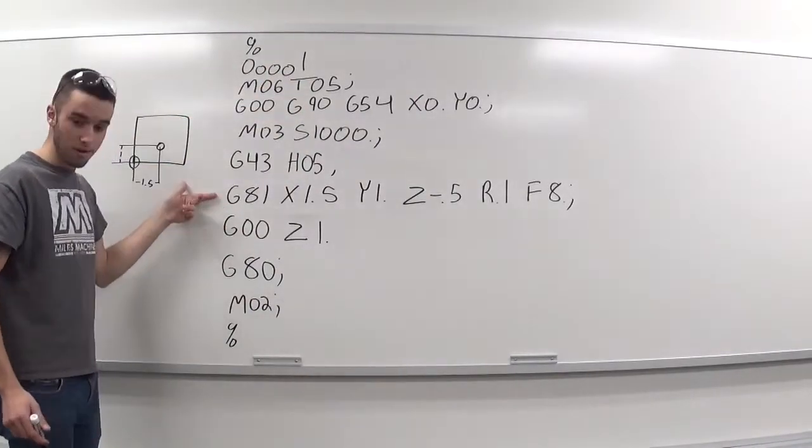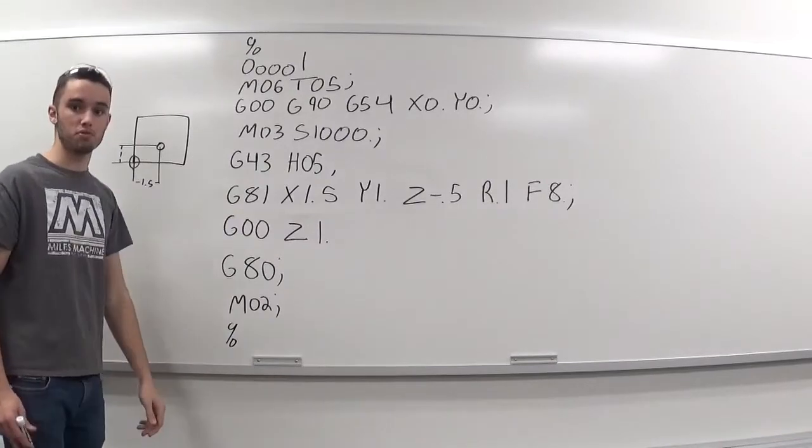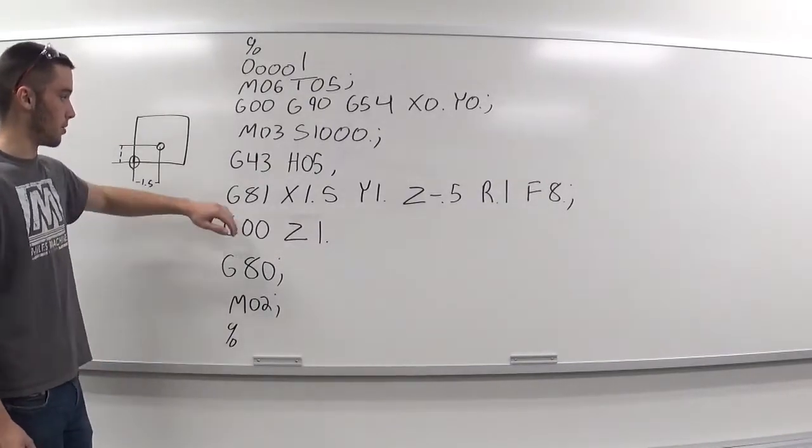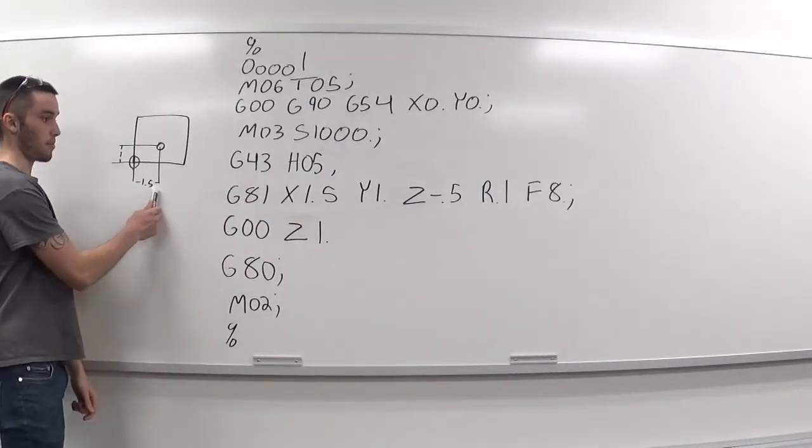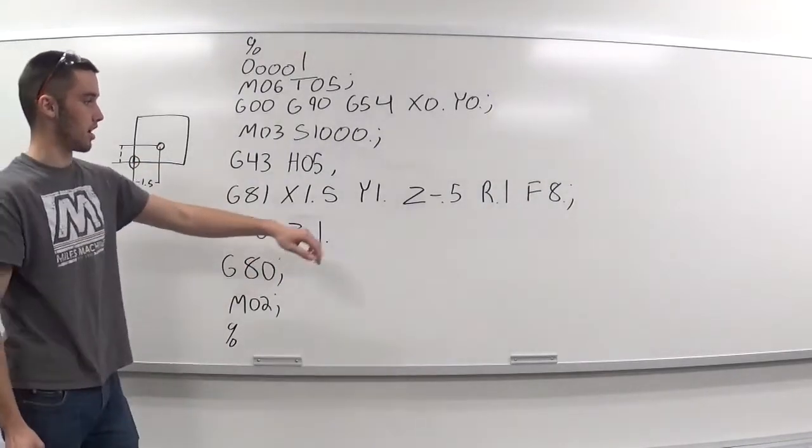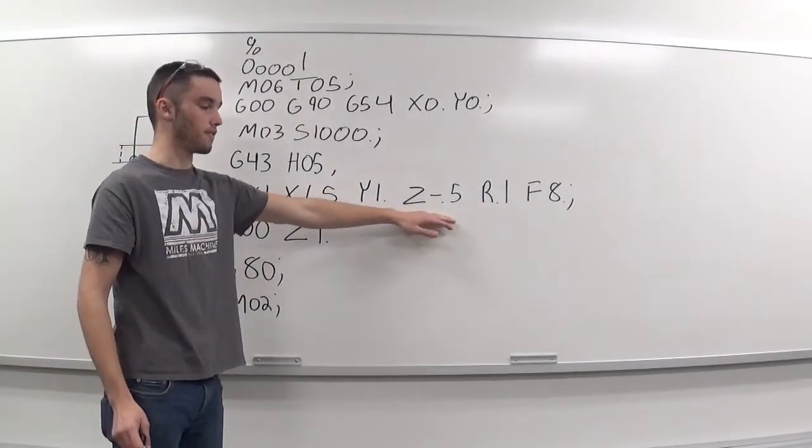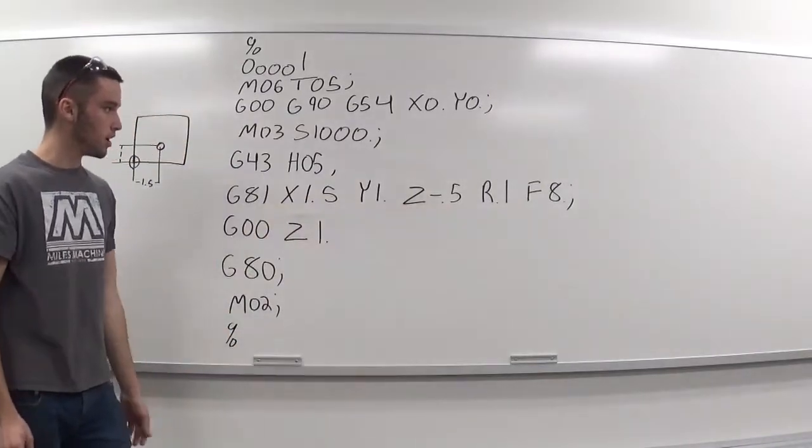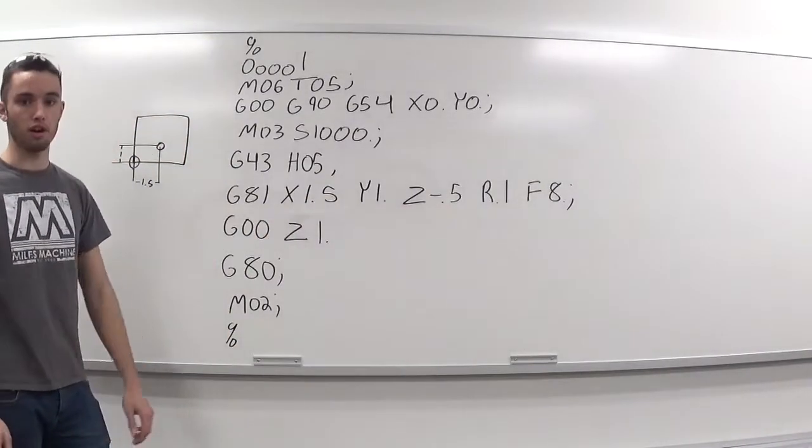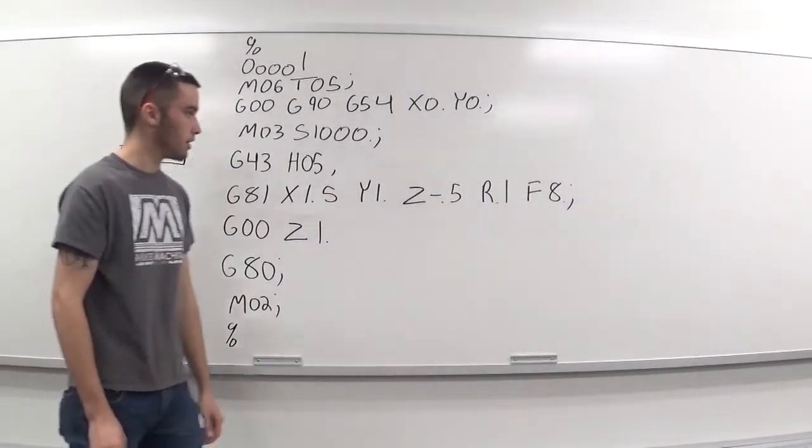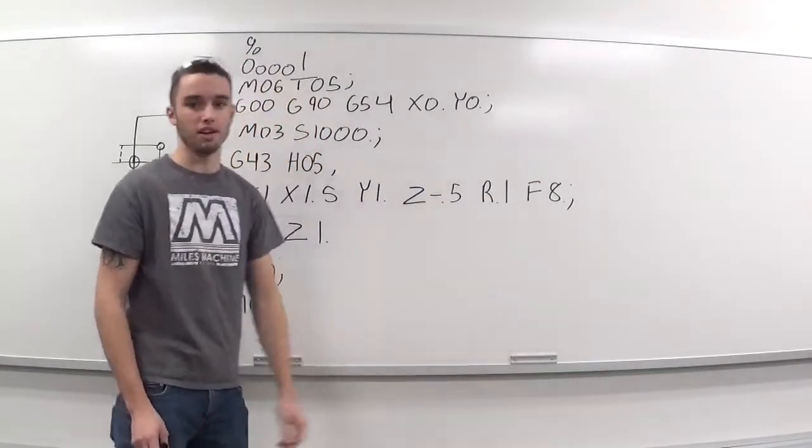And then we have G81, which is our canned cycle for drilling. We'll be moving over to an X of 1.5 and a Y of 1. And we'll be going a half inch deep into the material. Our R-plane is 0.1, 100 thou, above the part. And we'll be moving at a feed rate of 8 inches per minute.